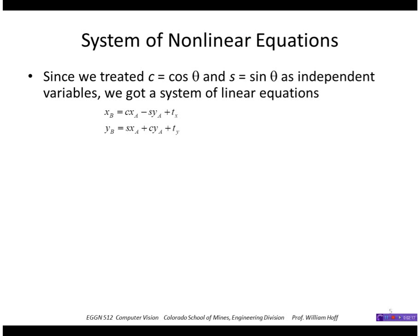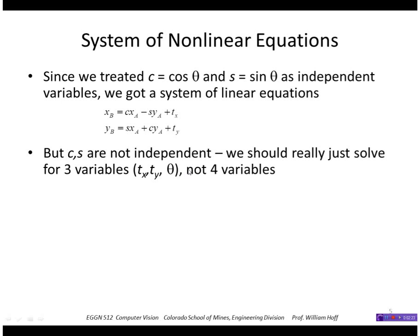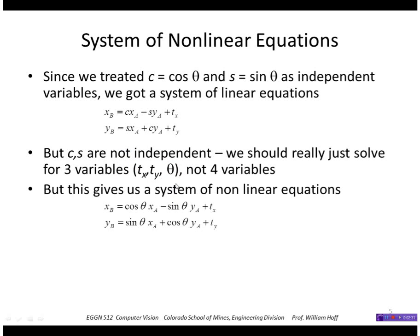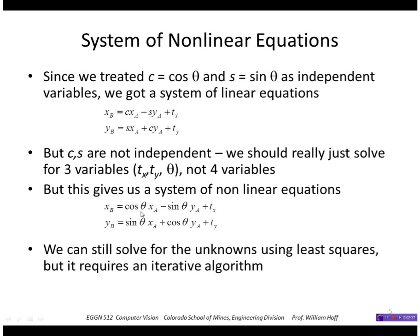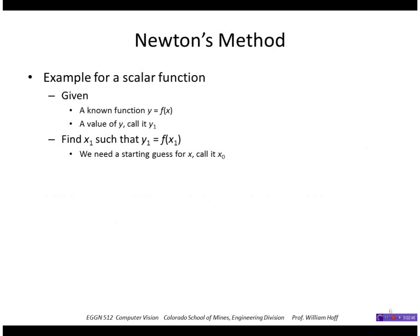To do this problem using a nonlinear system, we want to solve for theta directly and not treat sine and cosine as independent variables. So we really just want to find three variables instead of four. This is a system of nonlinear equations because cosine and sine are nonlinear functions, but we can still solve for these unknowns using least squares — it will require an iterative algorithm that I'll show next.